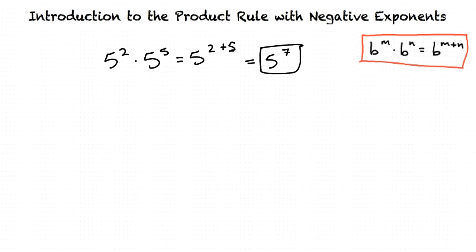Or, if we had the variable x as the common base, x to the sixth times x to the seventh would equal x to the sixth plus 7, which equals x to the thirteenth power.